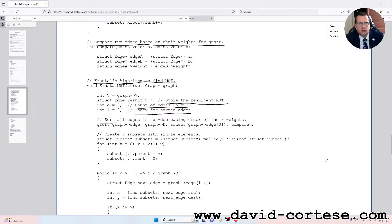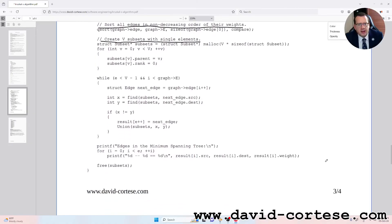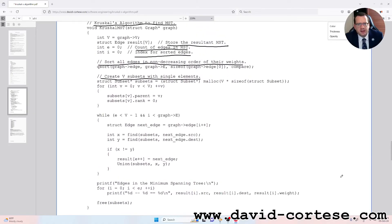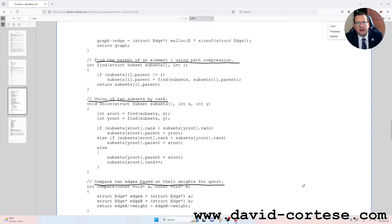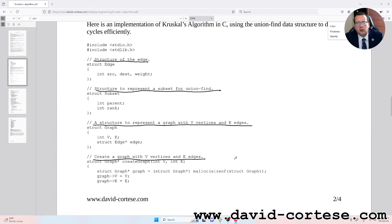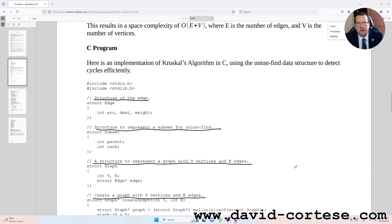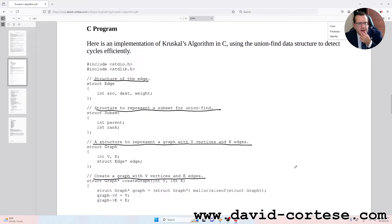Then sort all edges in a non-decreasing order of their weights, then create these subsets with single elements.